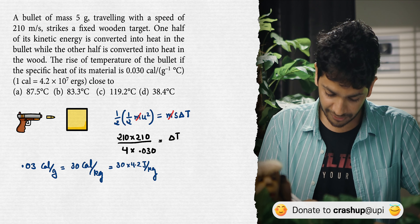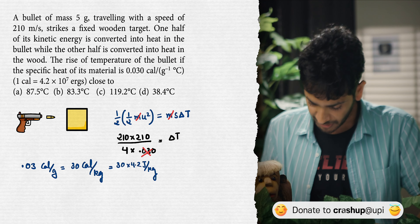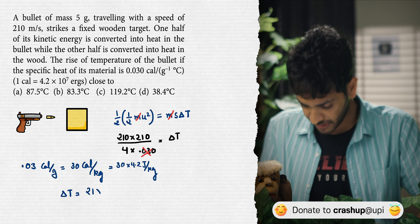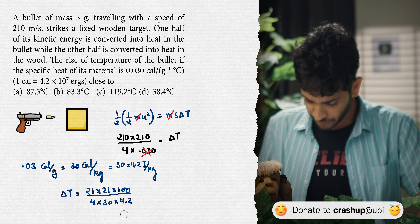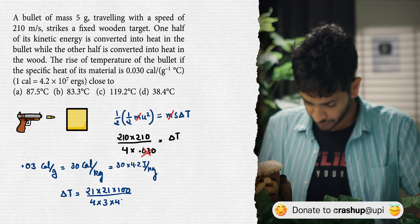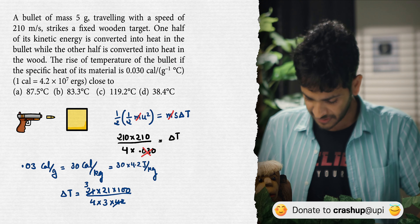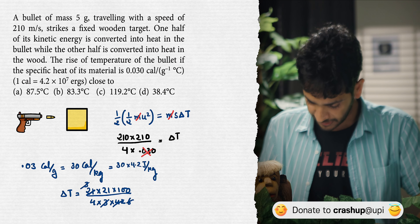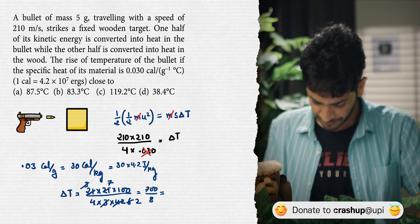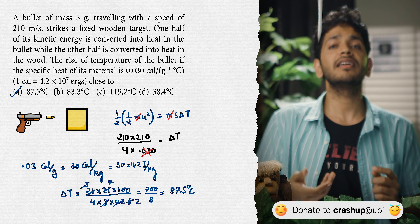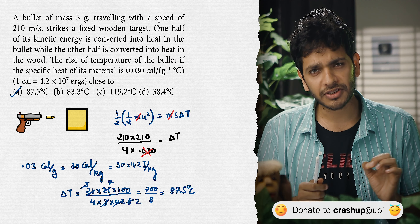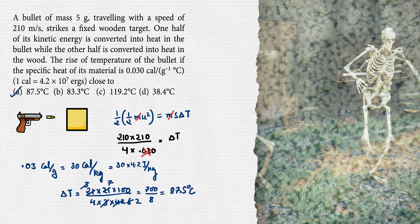So we must use this converted value. ∆T = (21 × 21 × 100) / (4 × 30 × 4.2). Writing 4.2 × 30 as 3 × 42, then simplifying: 7 cancels, 3 cancels, leaving 700/8 = 87.5 degree Celsius. Option A is the correct answer. Now let's do another previous year question involving springs.